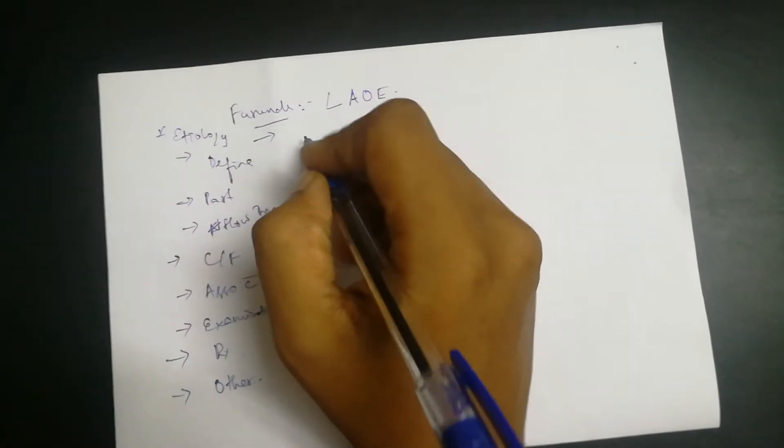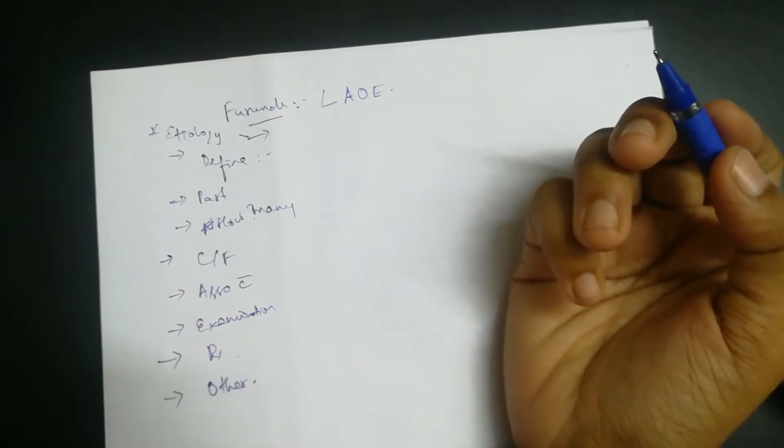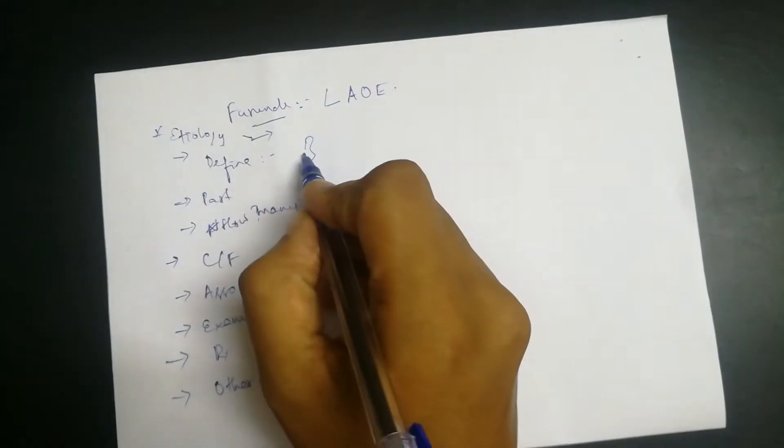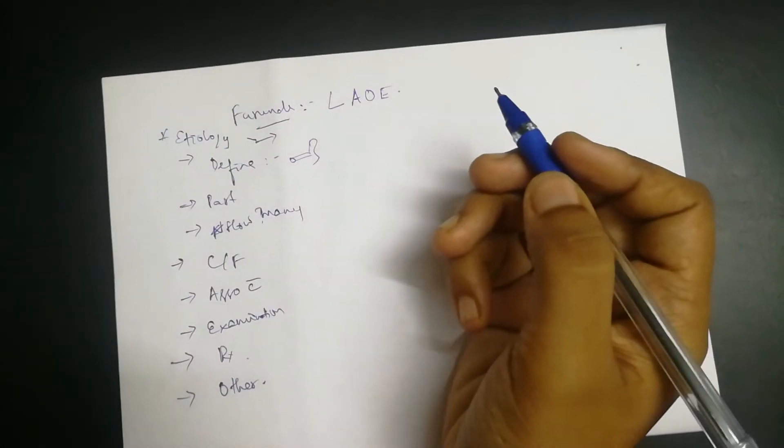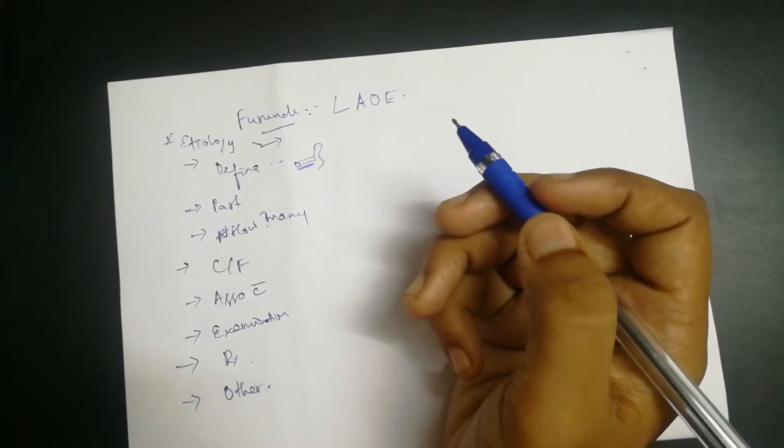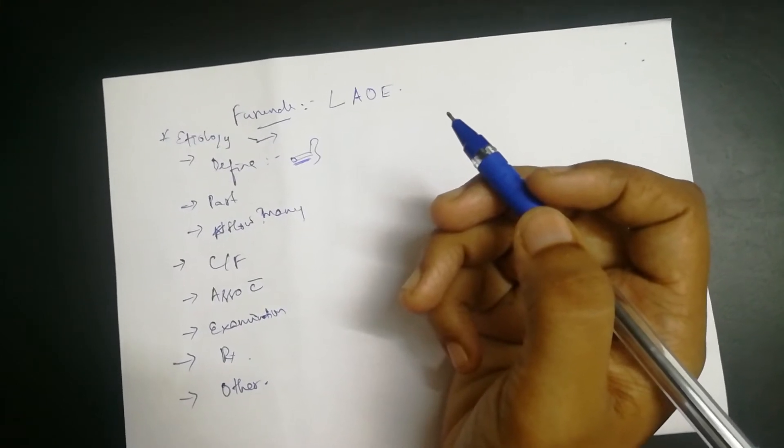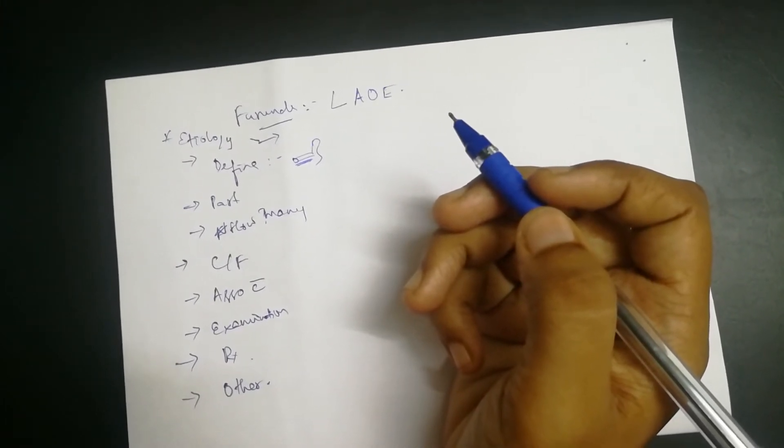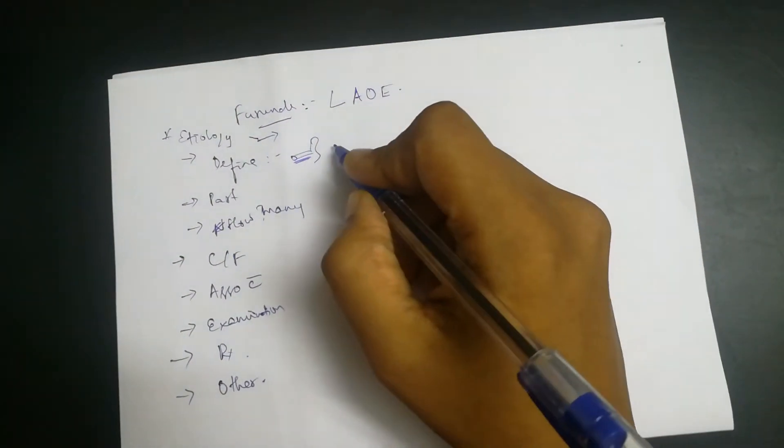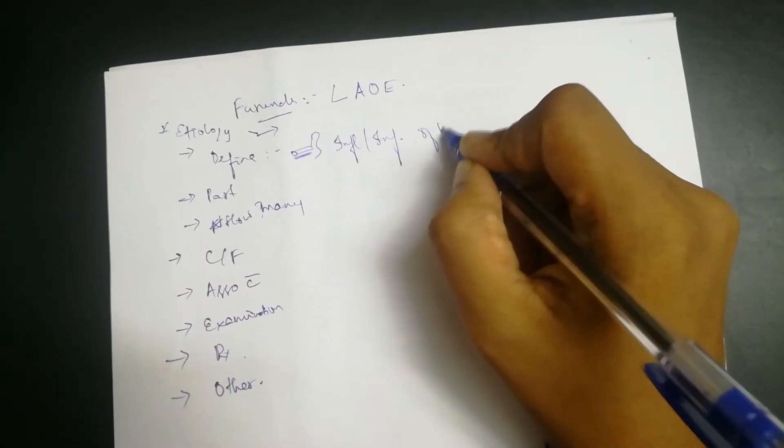Before knowing the etiology of furunculosis, let's define it. We have the ear which has the external ear called the pinna. The pinna has a canal called the external auditory canal. Furunculosis is a condition affecting the external auditory canal. Furuncle is the inflammation or infection of a hair follicle.